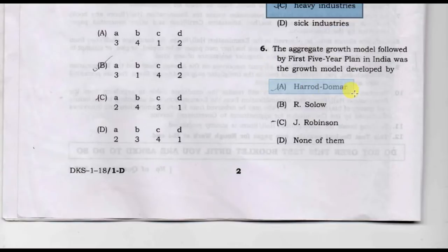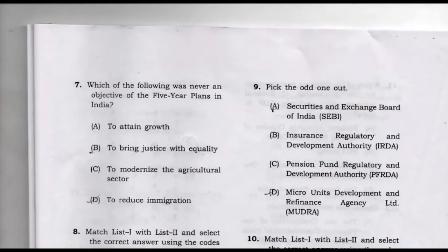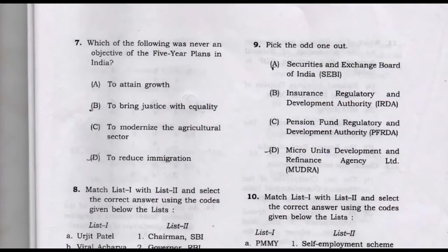The aggregate growth model followed by the five-year plan in India was the growth model developed by Nehru. Option D is the correct answer.